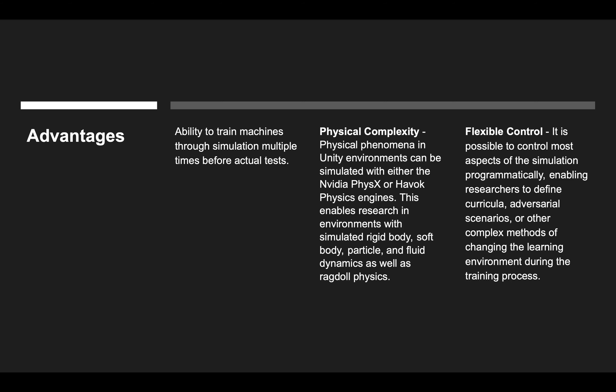Advantages: This helps us simulate and create multiple scenarios for the everyday world. Physical Complexity: Physical phenomena in Unity can be simulated using Nvidia Physics or Havok physics engine. Flexible Control: It is possible to control most aspects of the simulation programmatically. For example, game objects can be conditioned, created, and destroyed in real time.